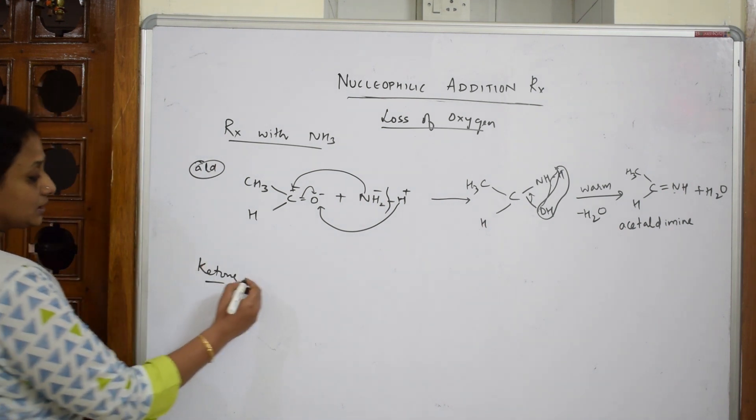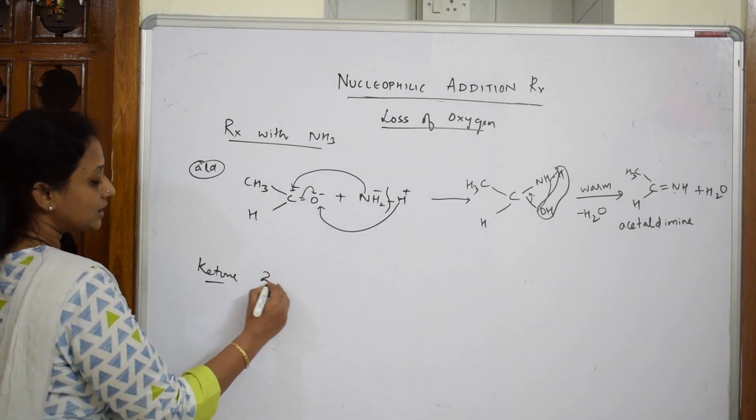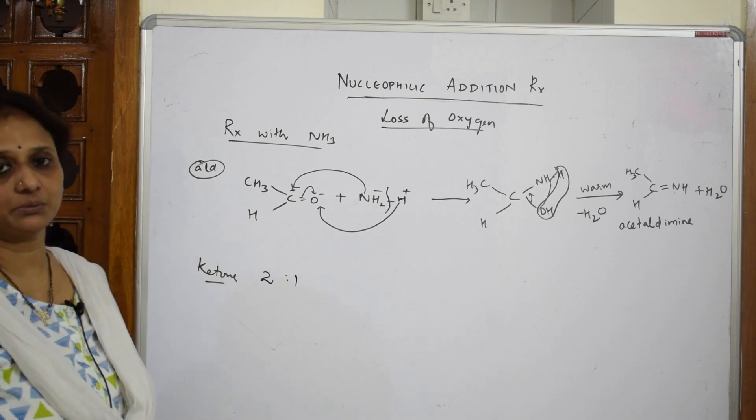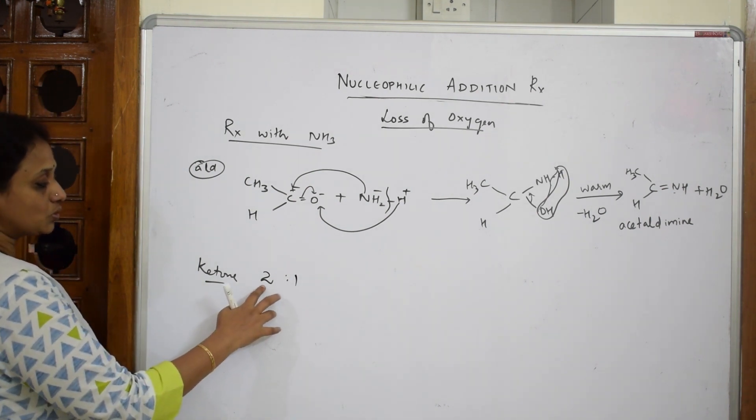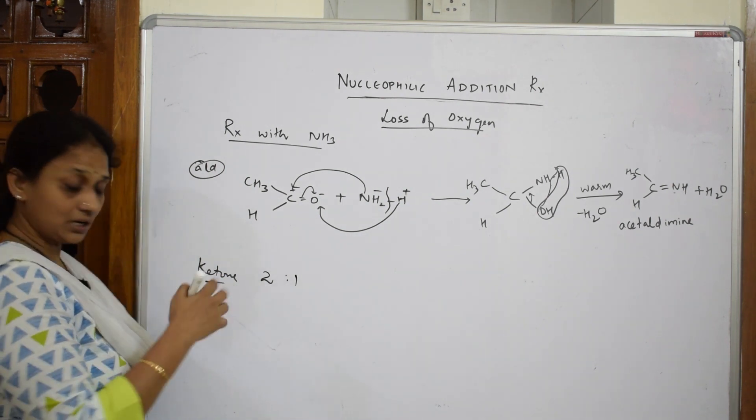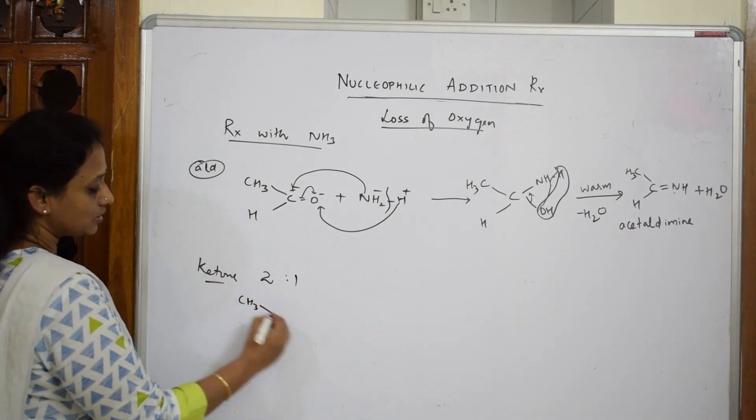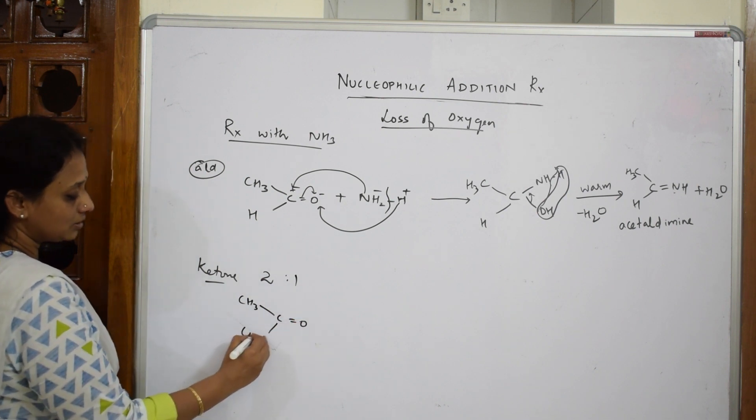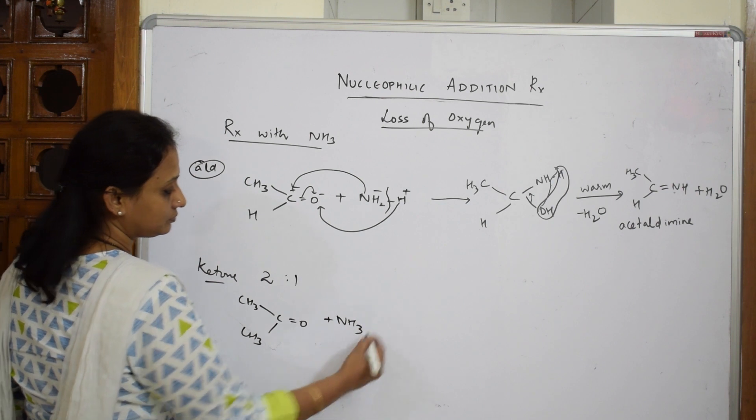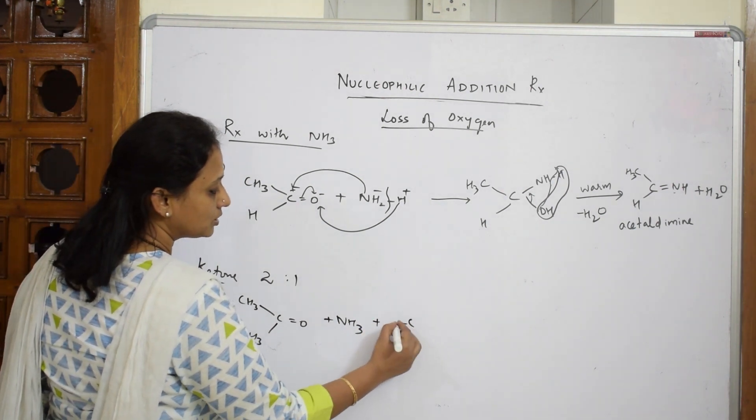Let us see with ketones. Here's the important thing: ketone will react in 2:1 ratio with ammonia. Remember that. If I take 2 moles of ketone and 1 mole of ammonia, how does this look? Ketone with O, your ketone. Now try to write ammonia.